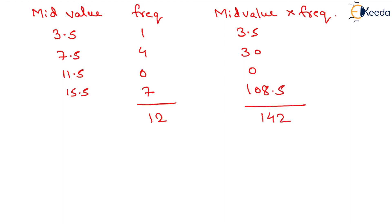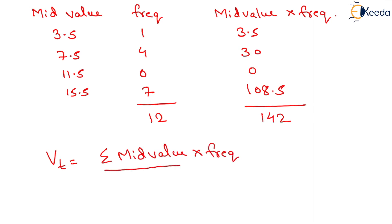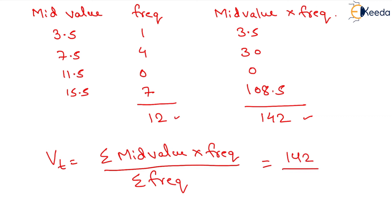Now we have to determine the time mean speed, for which the formula is: summation of mid value into frequency, divided by summation of frequency. The summation of mid value into frequency equals 142, divided by the sum of frequency which equals 12. After solving, we get the time mean speed equals to 11.83 km per hour.